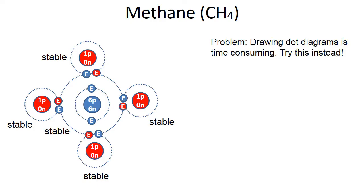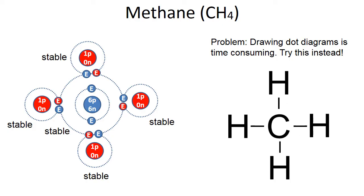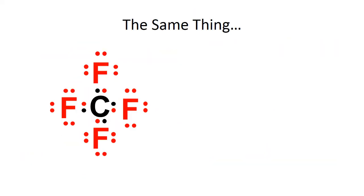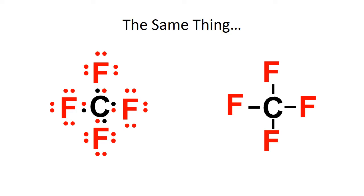Drawing dot diagrams with dots representing electrons can be time-consuming, so you'll often see dash diagrams instead. The dashes represent the bonds between carbon and hydrogen, and one dash is equivalent to two electrons. These dash diagrams are simpler, easier to read, and less time-consuming to draw. Here's another example — CF4 — where again every single dash represents two electrons.